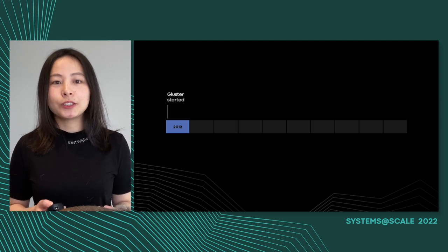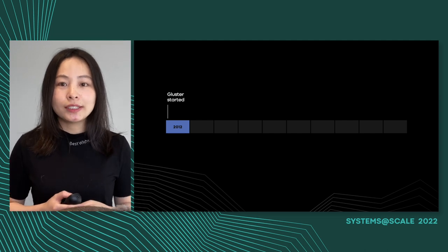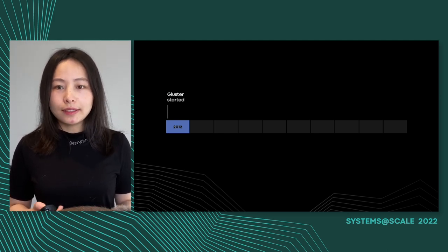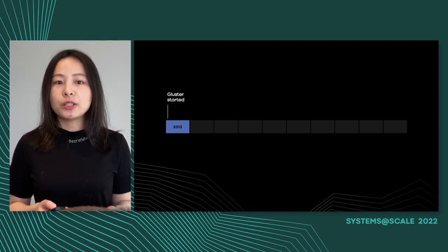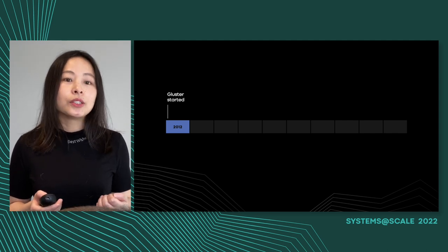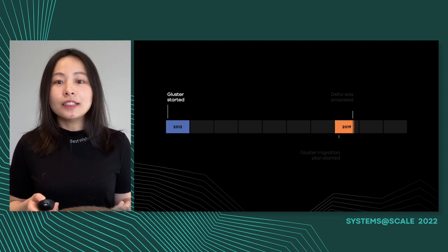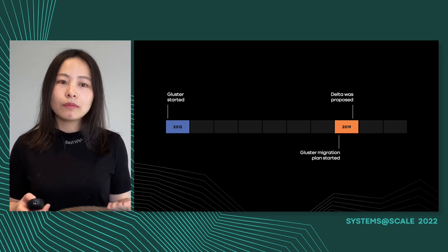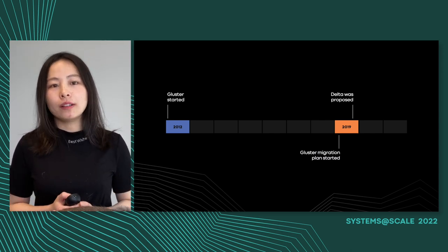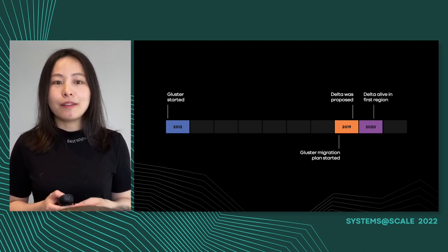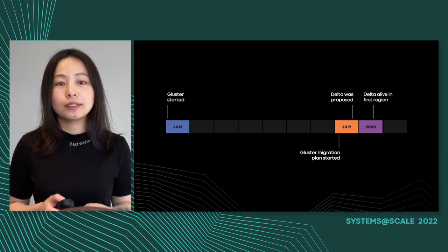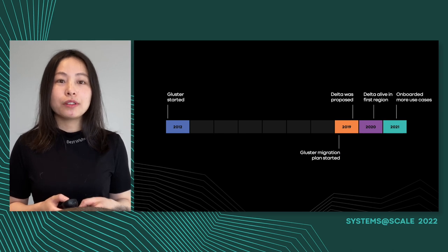Delta was introduced to replace Gluster storage service cluster inside Meta infrastructure. As the name suggests, the service was based on the Red Hat open source project. It was introduced in the year 2012. After running for six years, we started to see a lot of scaling problems, especially when the total data size reached exabyte level. Since Gluster was not designed to run at petabyte scale, let alone exabyte, it took significant effort to run Gluster at this scale. Then the plan to migrate from Gluster started in the year 2019. At the same time, Delta project was proposed to support some of the Gluster use cases from the migration, and one of the most important one is Meta's build system. Delta became alive in the first region at the end of 2020. Since then, we have been serving as a storage system for Meta build and distribution system. The service has also evolved and then started to support a few more use cases since then.